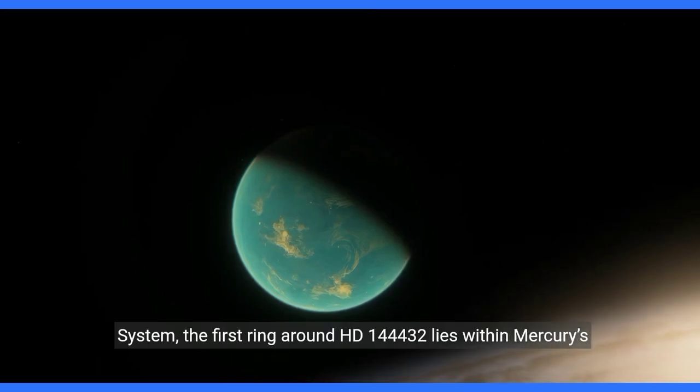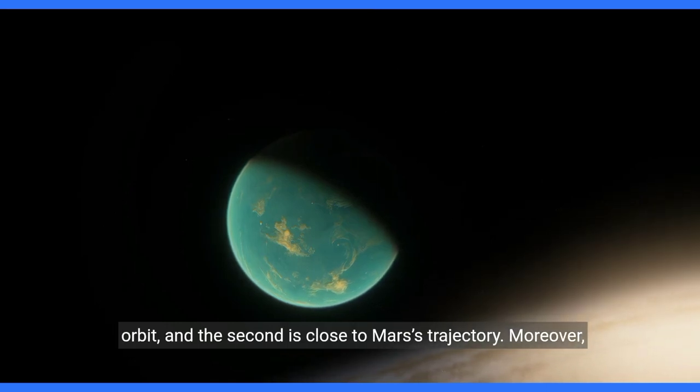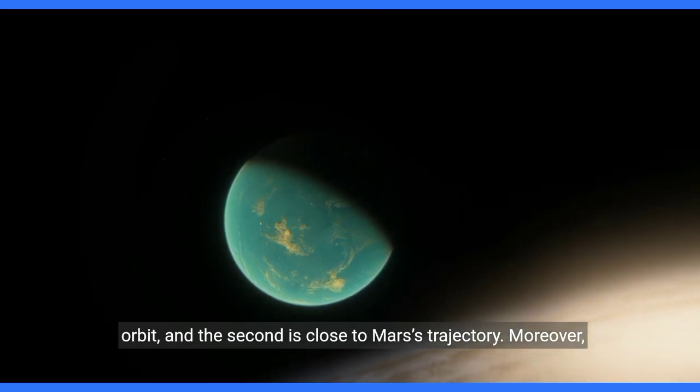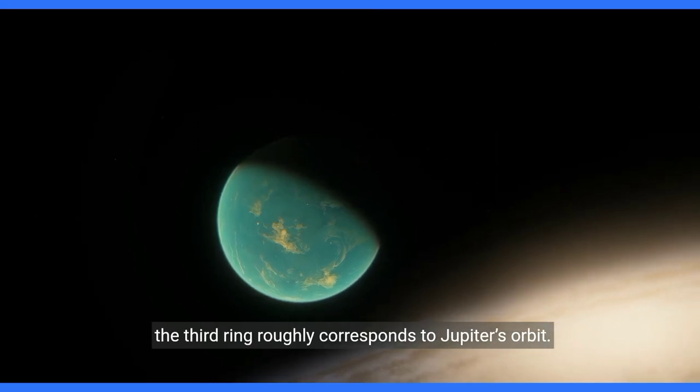Compared to the solar system, the first ring around HD 44432 lies within Mercury's orbit, and the second is close to Mars' trajectory. Moreover, the third ring roughly corresponds to Jupiter's orbit.